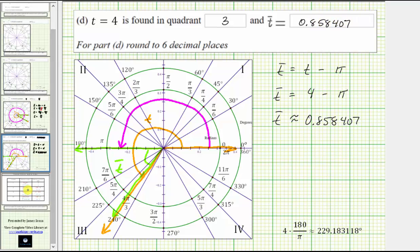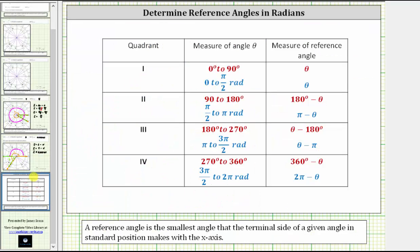Before we go, here are some notes that can help determine the measurement of a reference angle when the given angle is between 0 and 2 pi radians, or 0 and 360 degrees. I hope you found this helpful.